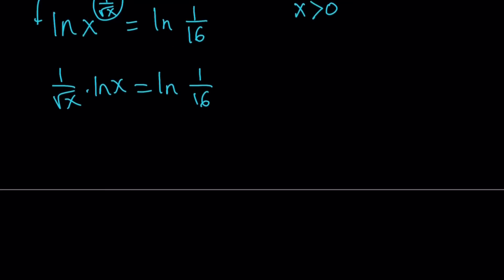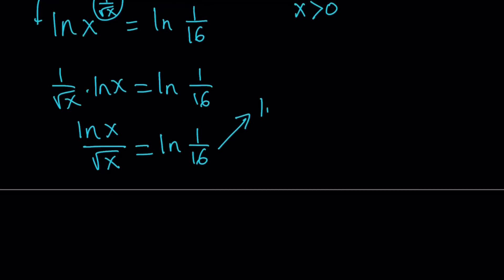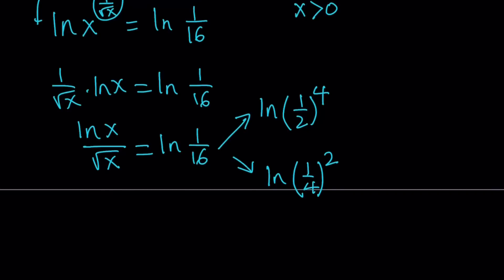Now I can write ln 1 over 16 in a couple of different ways. Let's go ahead and write the left-hand side as a quotient first: ln x over square root of x equals ln 1 over 16. There are two ways we can write ln 1 over 16 using powers: we can go with ln of 1 half to the fourth power, or ln of 1 fourth squared. Let's call this the first one and the second one.